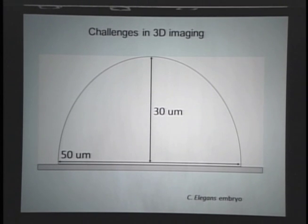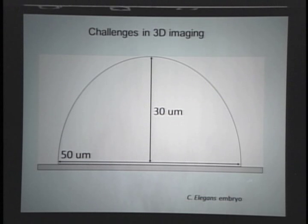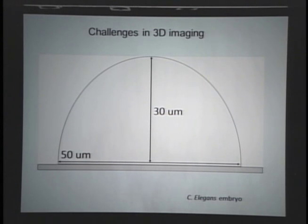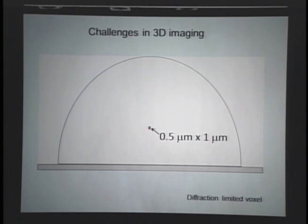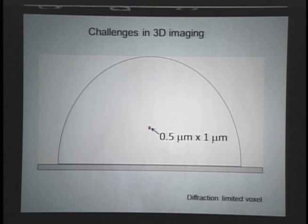Why is this a challenge? If you look at a C. elegans embryo in cross-section, it's about the size of a large cultured cell — about 40 to 50 microns laterally and about 20 or 30 microns thick. I'm after an atlas that gets you the position of all cells to subcellular resolution. I'd like to carve this embryo up optically into diffraction-limited voxels of less than a micron in size, over the 14-hour developmental time period.